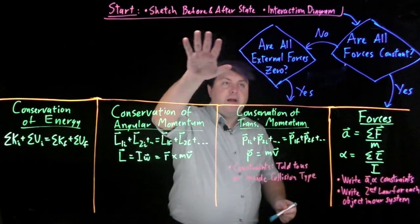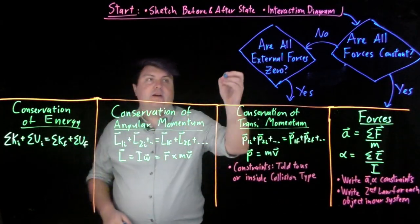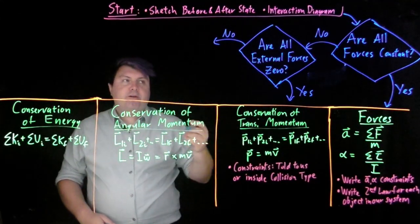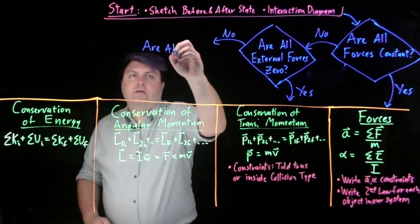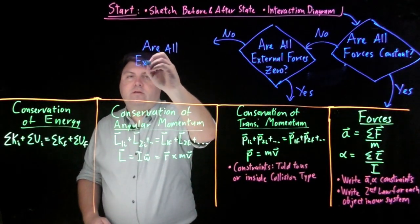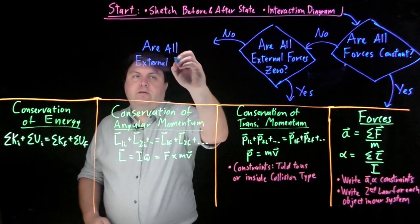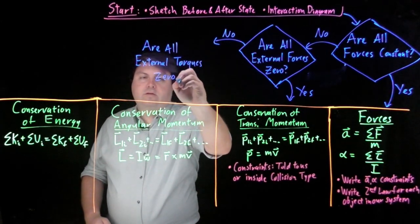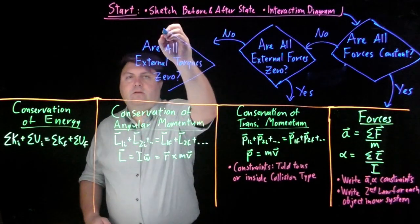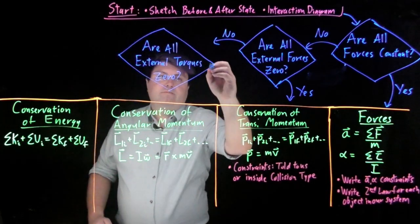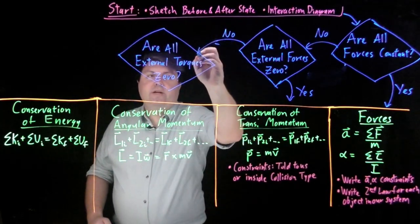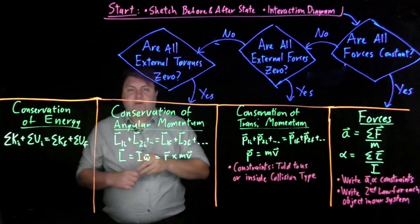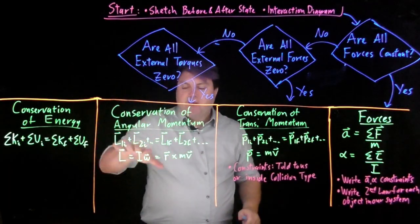So if we then have to answer our external force is zero, if we can say, have to say no to this, then we want to ask the same question for the torques. So if we say no to this, so if we can say yes to the external torques being zero, then we have conservation of angular momentum.